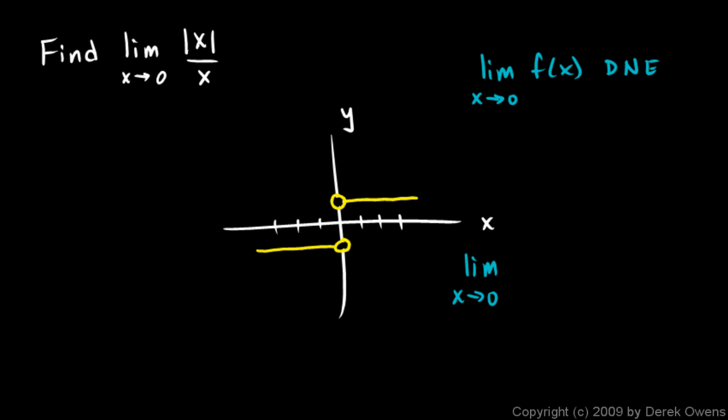We can say the limit as x approaches 0 from the left, and you can see here that it's negative 1, and the limit as x approaches 0 from the right is positive 1.